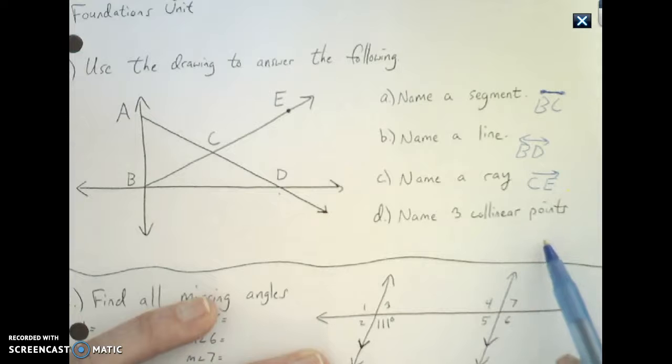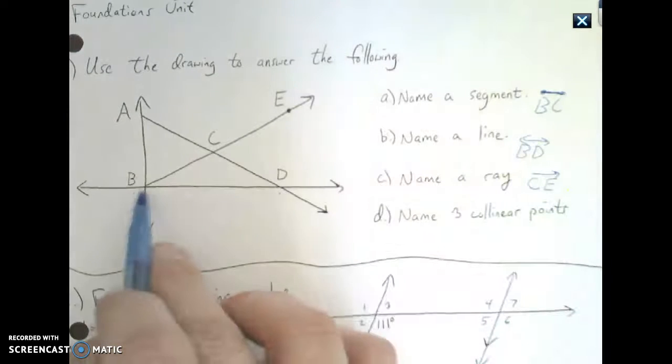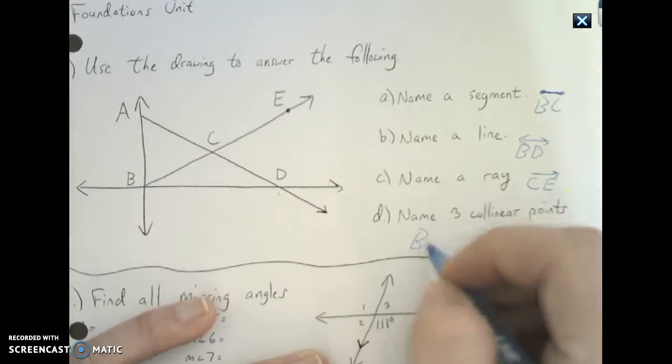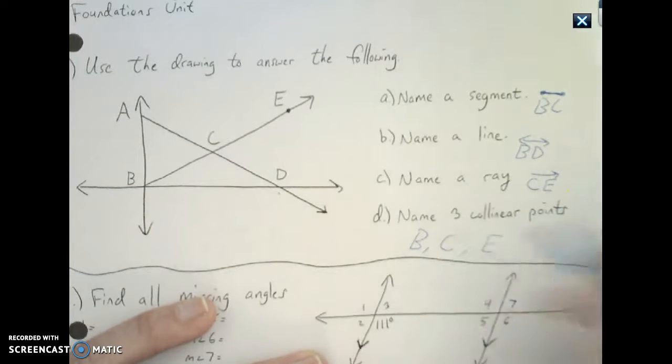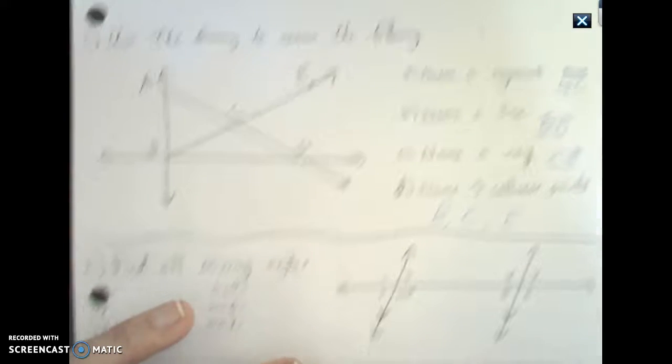Name three collinear points. A point is one letter. So B, C, and E. Each of them is its own thing.